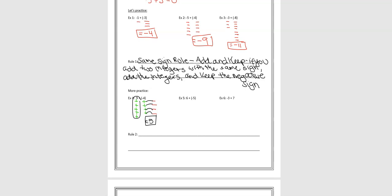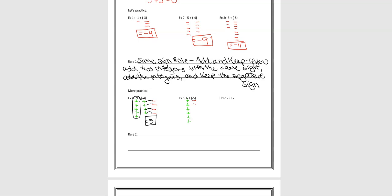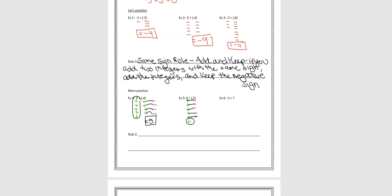Let's look at example 2. I have 6 positives — 1, 2, 3, 4, 5, 6 — and I'm adding 5 negatives: 1, 2, 3, 4, 5. So let's see how many cancel out. These cancel, these cancel, these cancel, these cancel, and these cancel. And what do you have left? Positive one.